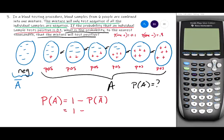For the probability of not A, the probability that the first sample in the mix is negative is 0.9. The probability that the second sample in the mix is negative is also 0.9, the third one being negative is another 0.9. We're using the multiplication rule here.